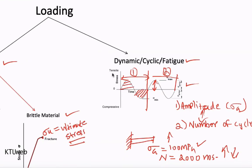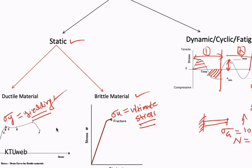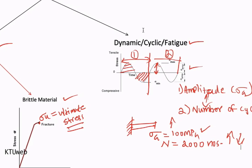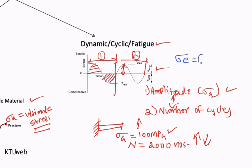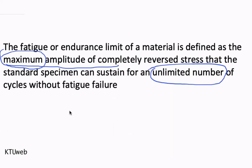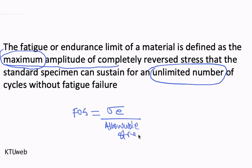Going back to the comparison: for static loading we have yield limitation for ductile materials and ultimate stress limitation for brittle materials. But in the case of dynamic or cyclic loading, you consider sigma e, the endurance limit. The endurance limit is the controlling factor when an element experiences dynamic or fatigue loading. If you want to calculate factor of safety, it goes: factor of safety equals endurance limit divided by allowable stress, or sigma e divided by sigma d.